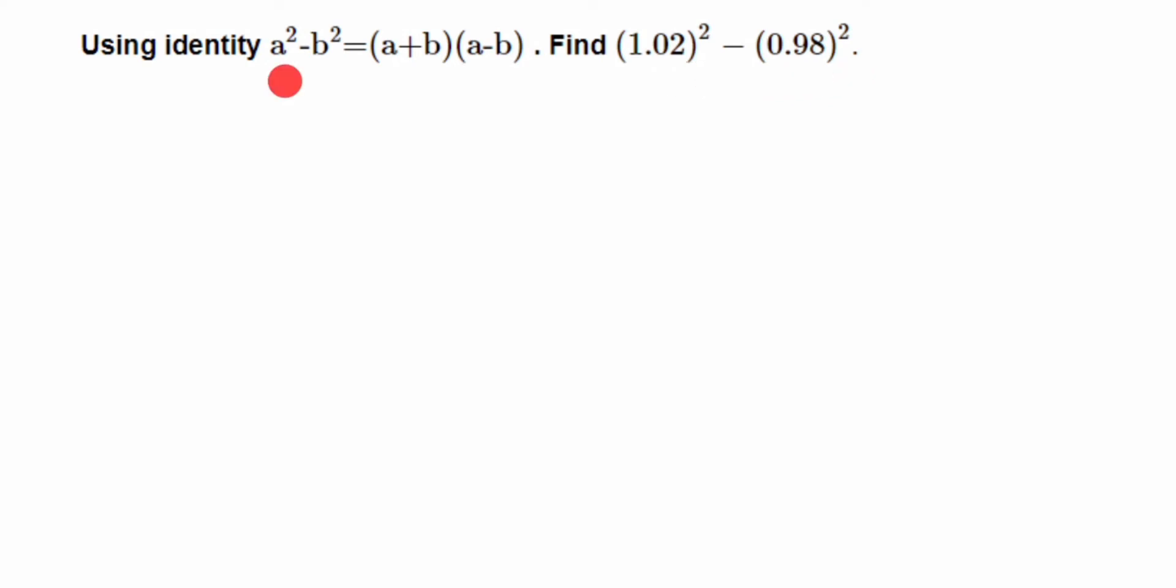We have to use the identity and then solve. Here in place of a² we have given 1.02 square, and in place of b² it's 0.98 square. So from here I can say that a value will be equal to 1.02 and b value is 0.98.